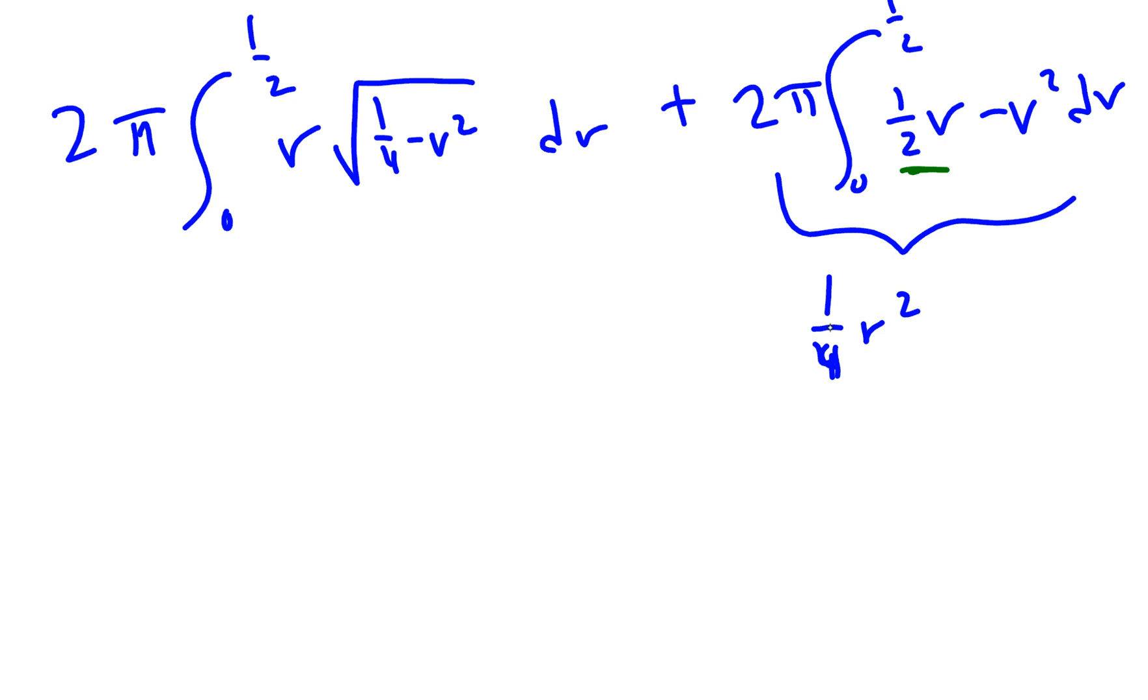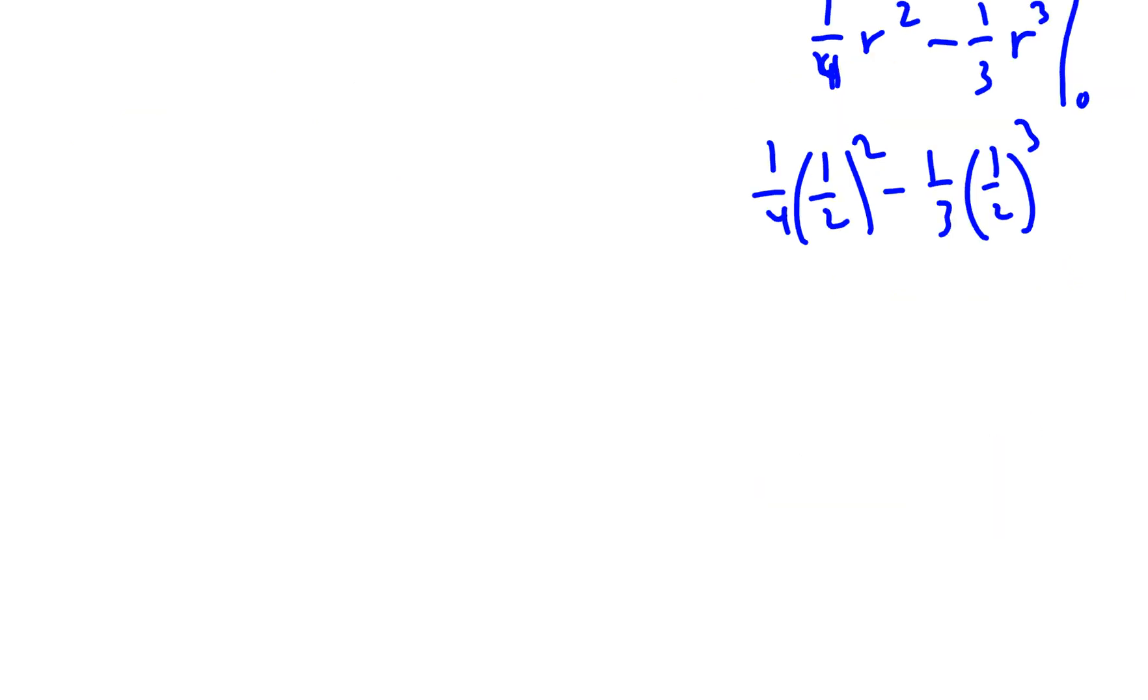So if we plug one half in here, we get one fourth times one half squared minus one third times one half to the third. We'll get one fourth times one fourth and then over here we're going to have one third times one eighth, so we end up with one sixteenth minus one twenty-fourth. That's really going to become, denominator's forty-eight, you have three forty-eighth minus two forty-eighth and you'll just get one forty-eighth. We'll just keep that in mind, make sure we're not going to lose track of it. We're going to need that, oh and don't forget it also gets multiplied by two pi, but we'll do that all at the end.